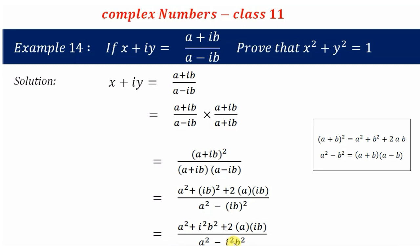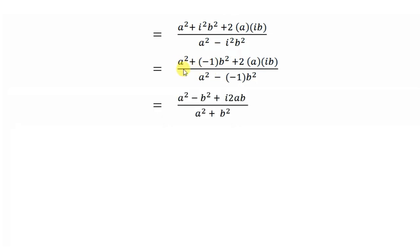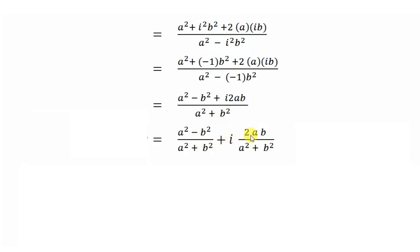Now we substitute i² = -1. In the numerator, i²b² becomes -b², so we get a² - b² + 2aib, which we write as (a² - b²) + i·(2ab). In the denominator, -i²b² = +b², giving a² + b².